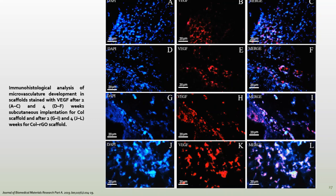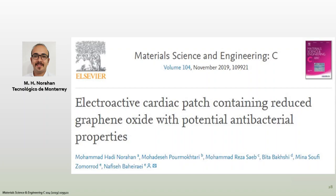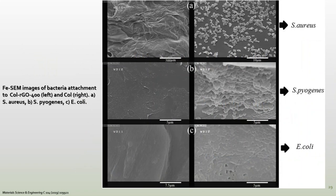The newly formed blood vessels were also investigated by immunofluorescent staining with VEGF. More capillaries were observed in electroactive scaffolds, confirming enhanced vascularization in the scaffolds with reduced graphene oxide owing to the angiogenic characteristics of RGO. In another study, we assessed the antibacterial activity of graphene oxide and reduced graphene oxide containing scaffolds. We observed that RGO-coated scaffolds completely inhibited attachment of bacterial strains onto their surface compared to collagen scaffolds.